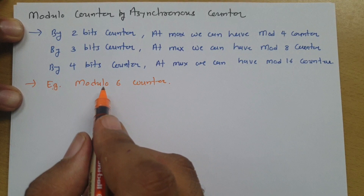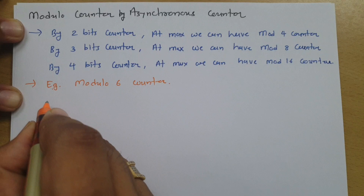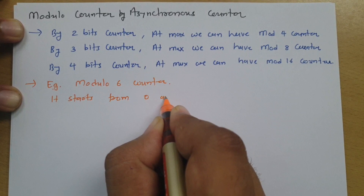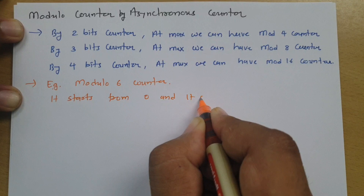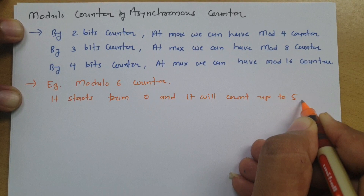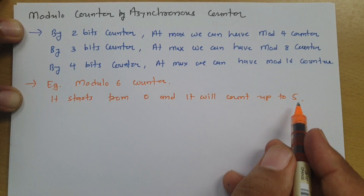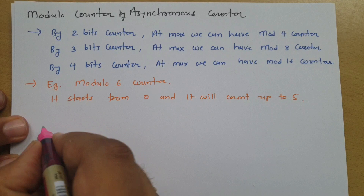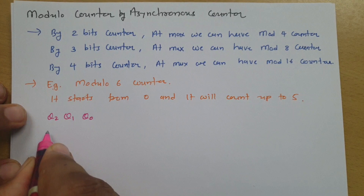For a modulo-6 counter, we need to understand that there are six total counts, ranging from zero to five. To represent the value five, we need at least three bits. So if we have three bits Q2, Q1, and Q0, the counter will start from zero and count up to five.